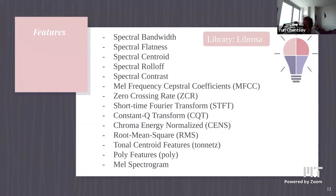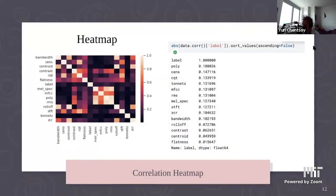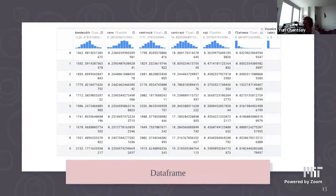We created a correlation heat map and listed each correlation in descending order. Through the heat map and trial and error, we found the features that described the data well and removed those that didn't. This is the resulting data frame where columns are features fed into the model and rows are each entry.